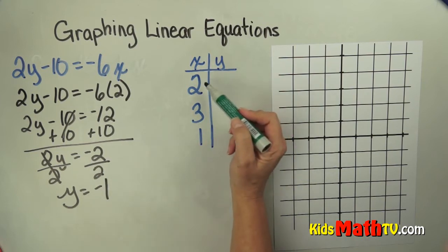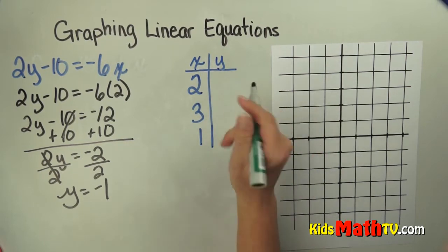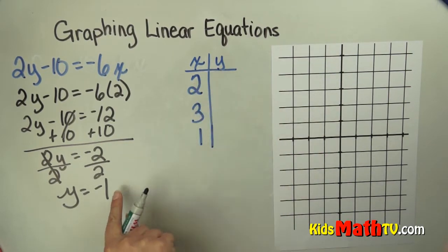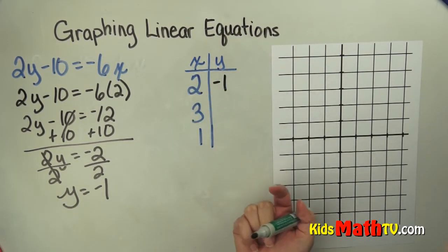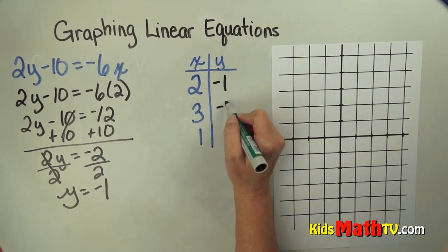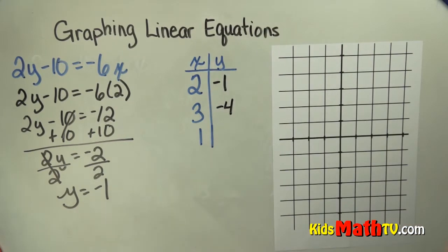So if x is 2, y is negative 1. And if I were to do that with both 3 and 1, if I do it with 3, y becomes negative 4. And if I do it with 1, y is 2.